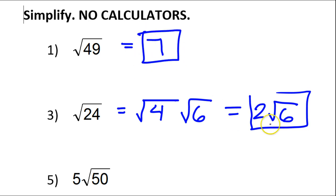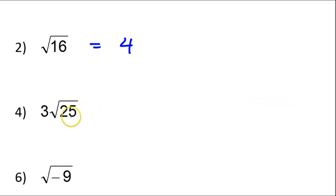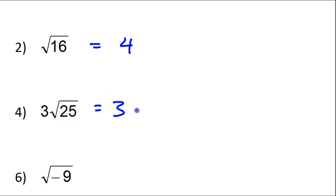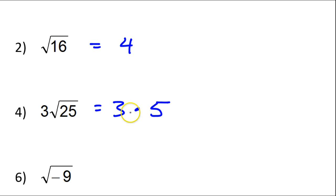Get all of this back to the front of your brain. Now, if I want to do 3 times the square root of 25, then I've got the 3. The square root of 25 is 5. And these two are going to wind up multiplying together, so that's going to give us 15.